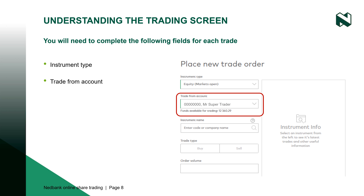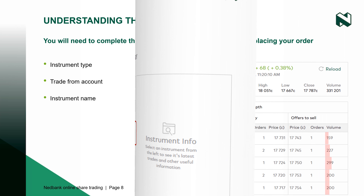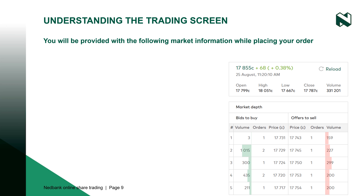Once you have clicked on the trade link, a trading window will open containing the fields you need to complete in order to place the trade. Under instrument type, you need to select the market you would like to trade on — either contract for difference, known as CFD, or equities. The CFD option will only be available if you have registered for a CFD account. The brackets after the instrument type indicate whether the market is currently open or closed. The market does not need to be open for you to submit an order; if you submit an order outside of trading hours, the order will be saved and then sent to the market once it opens.